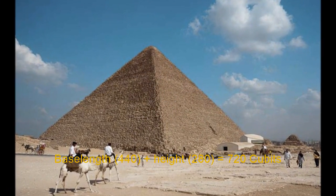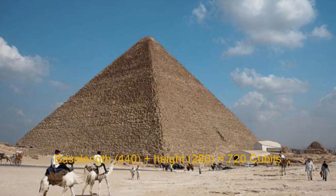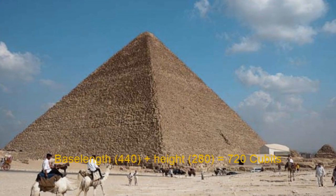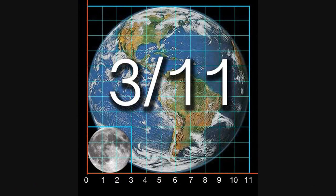But there's more. Think of 720 miles as a large unit of measurement. Exactly 11 of these units happen to fit into the diameter of the Earth, which is 7,920 miles.